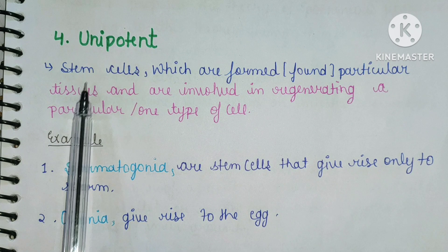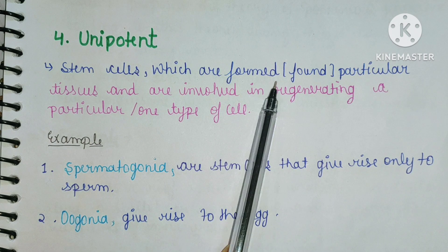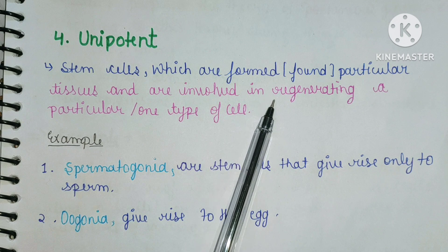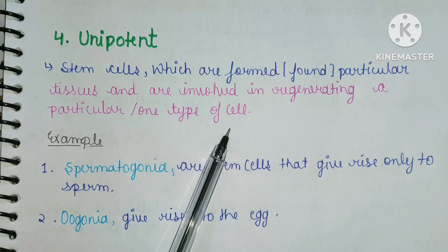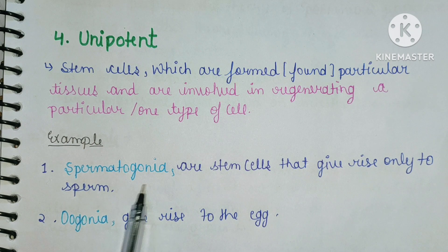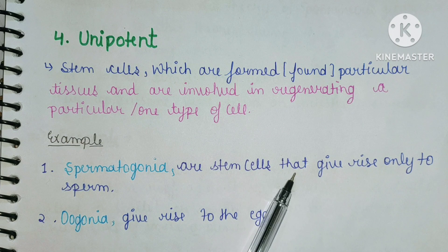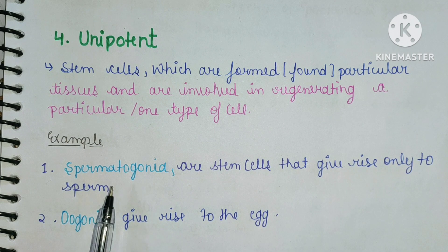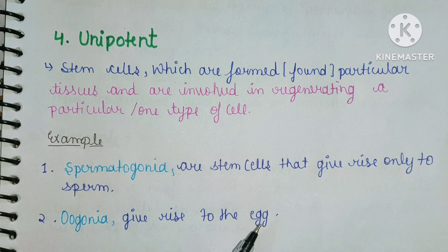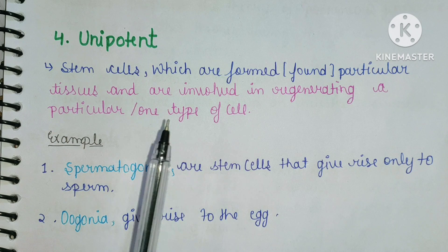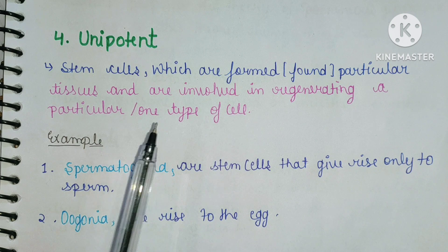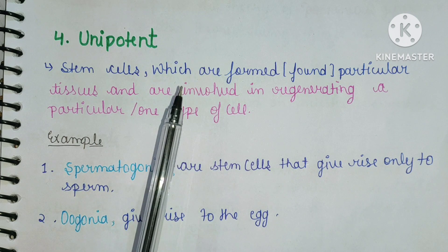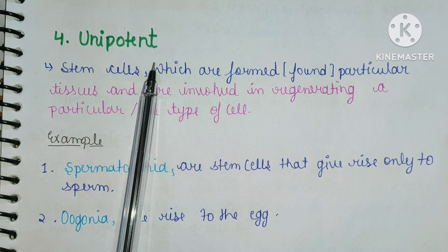The fourth type is unipotent stem cells, which are formed in particular tissues and are involved in regenerating one type of cell. Thank you for watching my video.